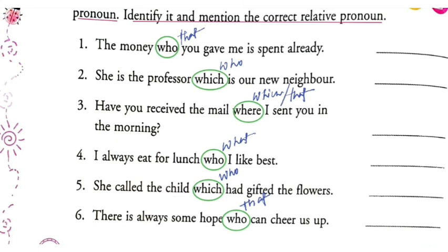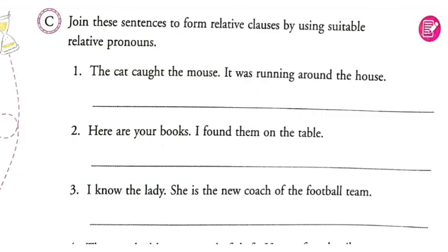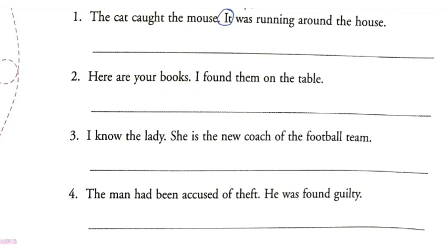These are the errors in the sentences and we have to identify them. The same type of error correction question may appear in exams. Next exercise: you will have two sentences and you have to join them using suitable relative pronouns. 'The cat caught the mouse. It was running around the house' — join as 'the cat caught the mouse which was running around the house'. 'Here are your books. I found them on the table.'